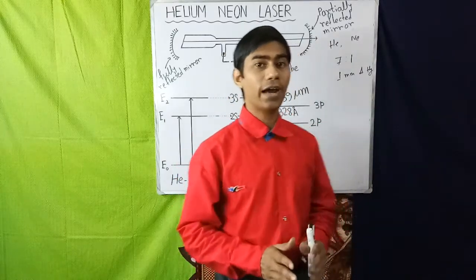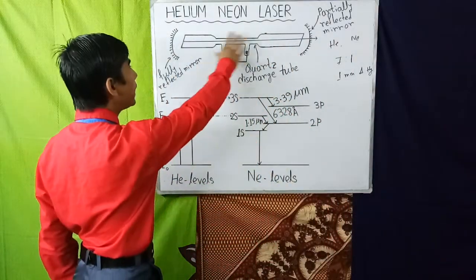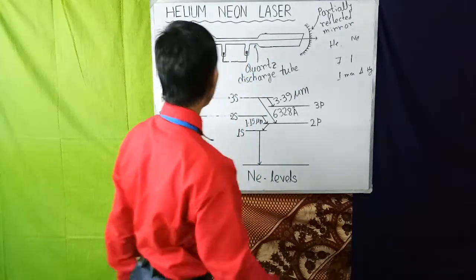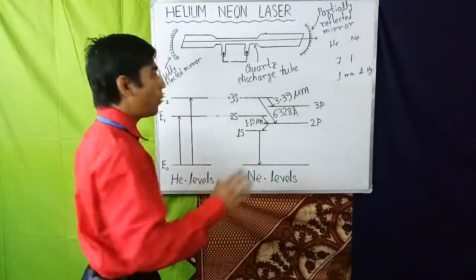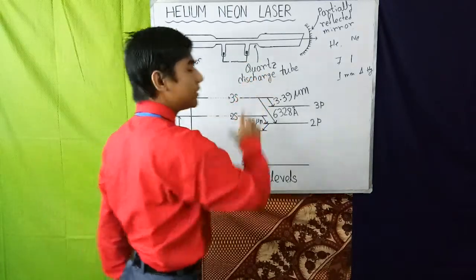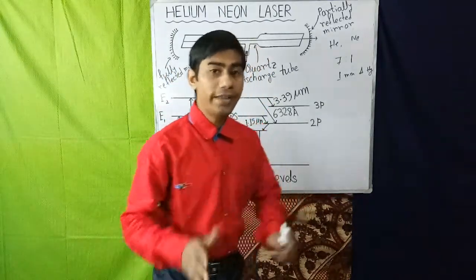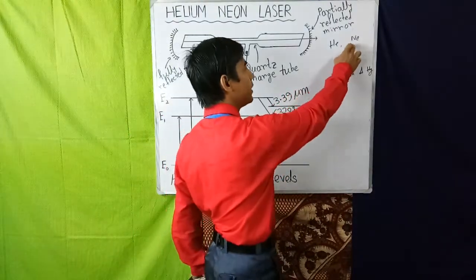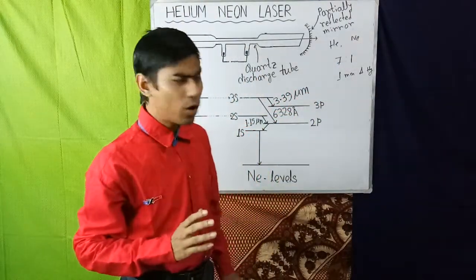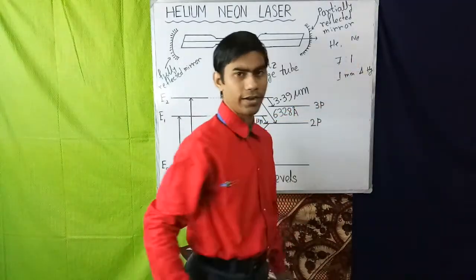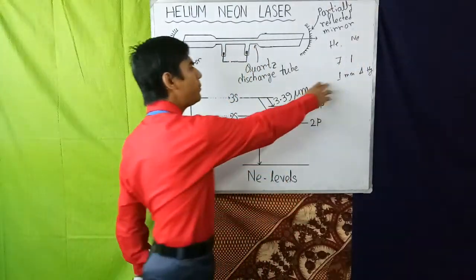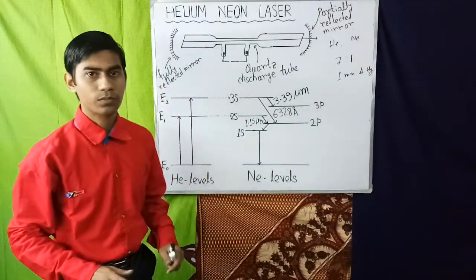The schematic diagram for the construction of helium neon laser is shown in this figure. It consists of a long narrow quartz discharge tube containing a gas mixture of helium and neon in the ratio of about 7 is to 1 and at a pressure of about 1 millimeter of Hg.